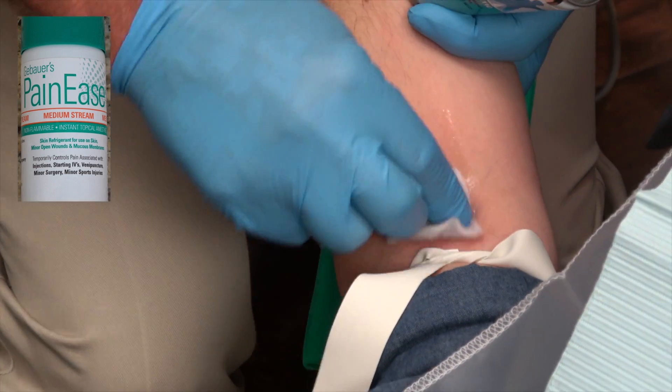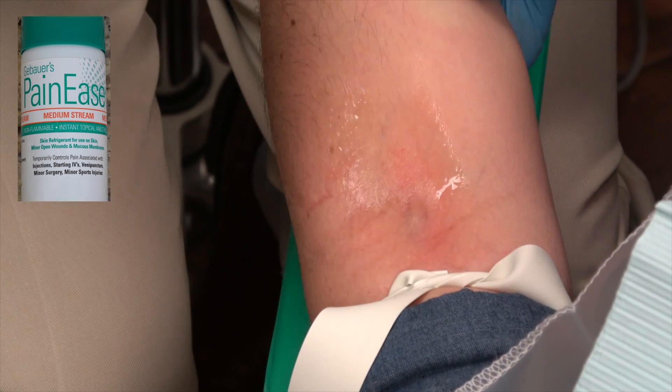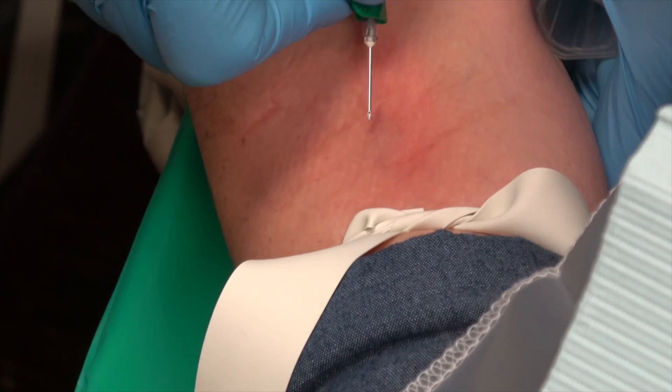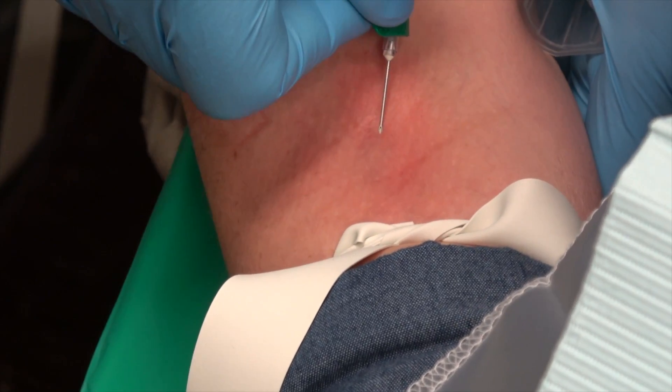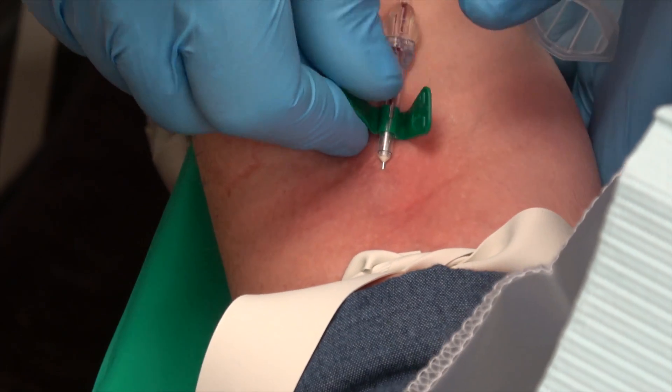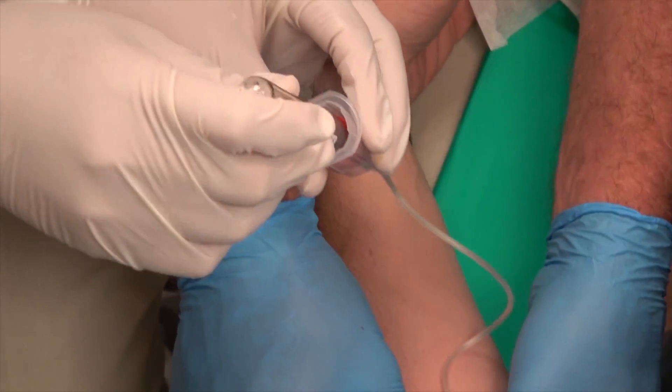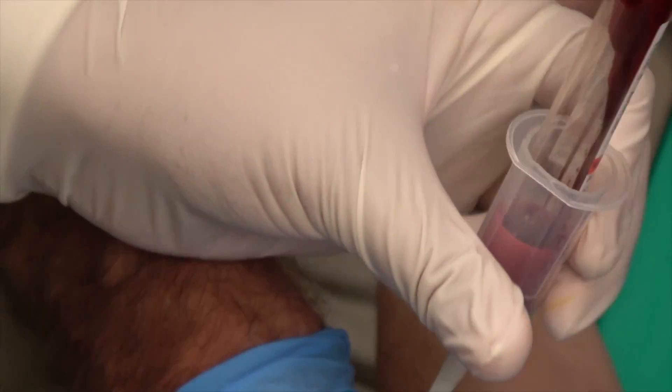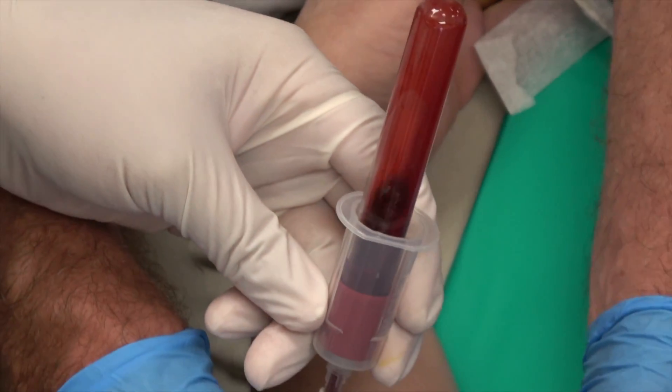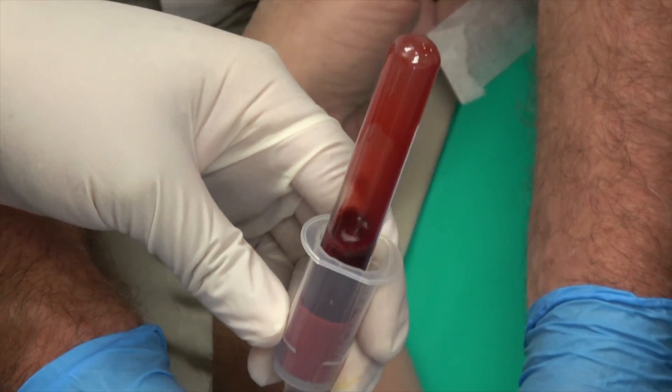First, we're going to perform a phlebotomy and draw blood from the patient into these vacuum vials. And normally, you'll draw at least two, sometimes four, sometimes six. These vials have a negative pressure, and they draw the blood into the vial.